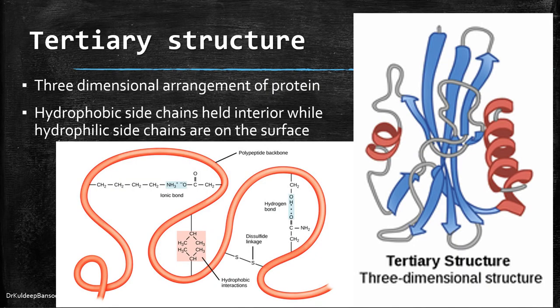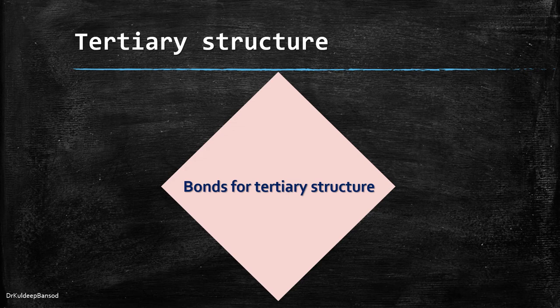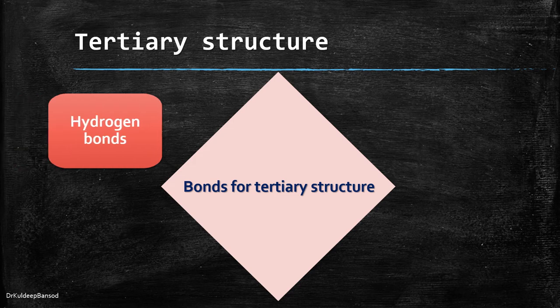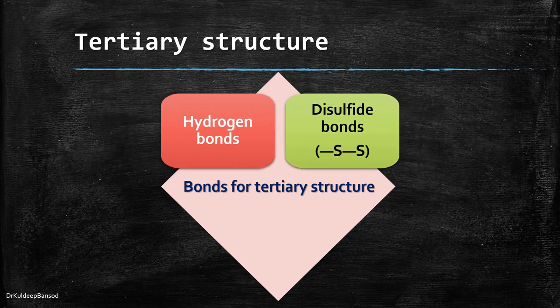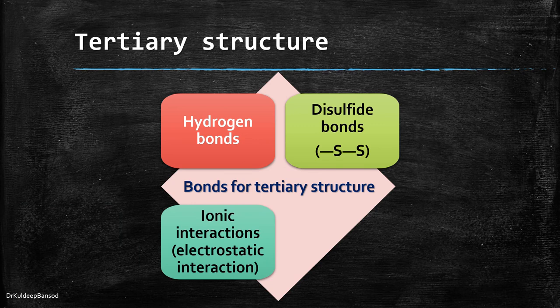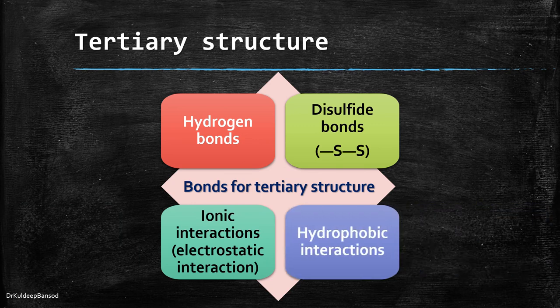The three-dimensional arrangement of protein structure is referred to as tertiary structure. It is a compact structure with hydrophobic side chains held in the interior while hydrophilic groups are on the surface of the protein molecule. This type of arrangement ensures stability of the molecule. Besides hydrogen bonds, the tertiary structure is also stabilized by disulfide bonds, ionic interactions (electrostatic bonds), and hydrophobic interactions.